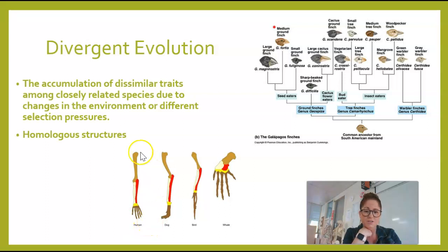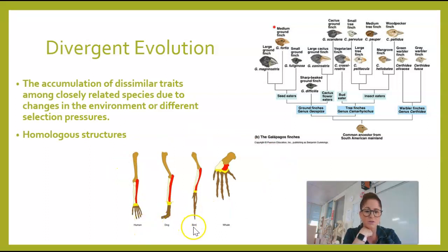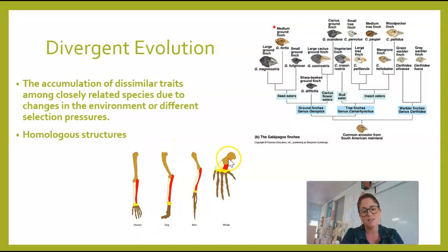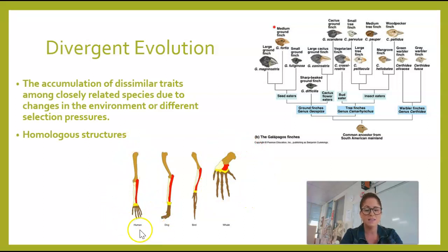One evidence for divergent evolution is homologous structures. Homologous means that the structure underneath is the same, even though the function on the outside might be different. If we use a human, a dog, a bird, a bat wing, and a whale, we see that the same sort of bone structure exists — one bone followed by two, followed by some smaller bones. In humans, this is the humerus, radius, ulna, carpals, metacarpals, and phalanges. The basic structure has remained the same despite a whale having a much different function than our arm, which is evidence that they must have a common ancestor.